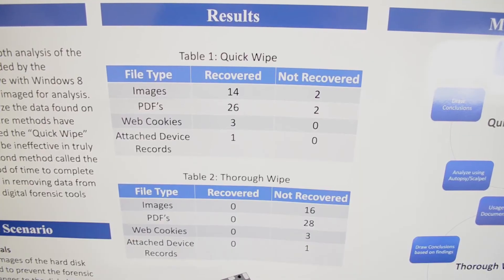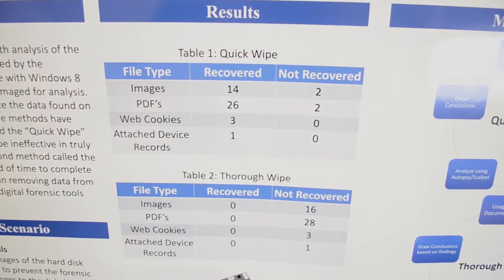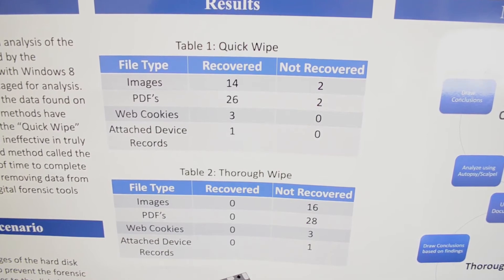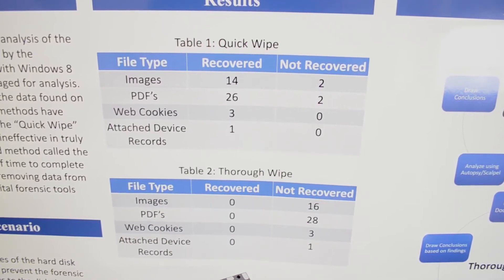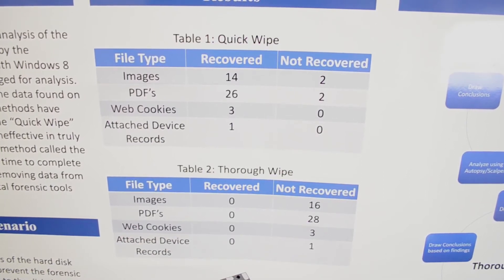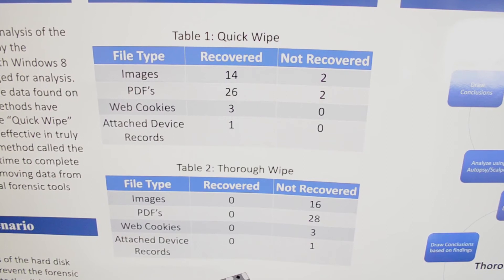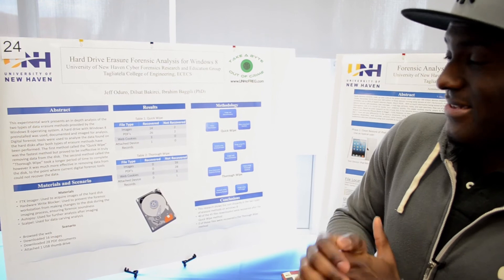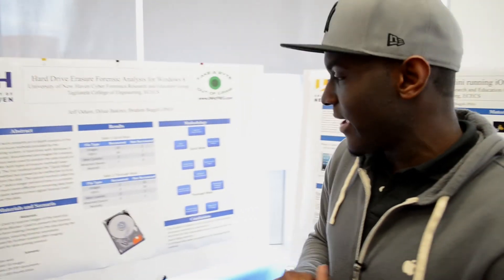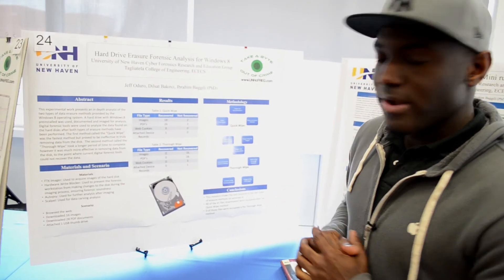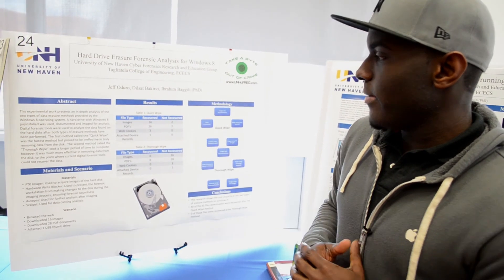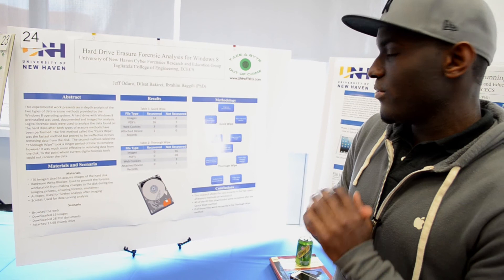The second method is the thorough wipe. When we tested that, we found it took a lot longer — overnight, around seven or eight hours for the whole hard drive. But when we looked into the hard drive with Autopsy and Scalpel after creating the disk image, we found it was a lot tougher to recover data. It actually writes zeros all across the hard drive, so it does a pretty good job of cleaning it off. With the tools we worked with, we weren't able to get anything back. The conclusion we drew was that the thorough wipe was a lot more effective in getting rid of your data.